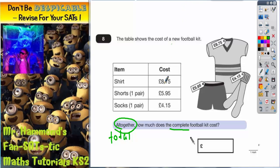Now when you're adding decimals, you've got to make sure that in your column method, your numbers are lined up in the correct columns. One way of doing that is to actually put your decimal points in first, and then build the number up around the point. So we've got 8.75, we've got 5.95, and we've got 4.15.